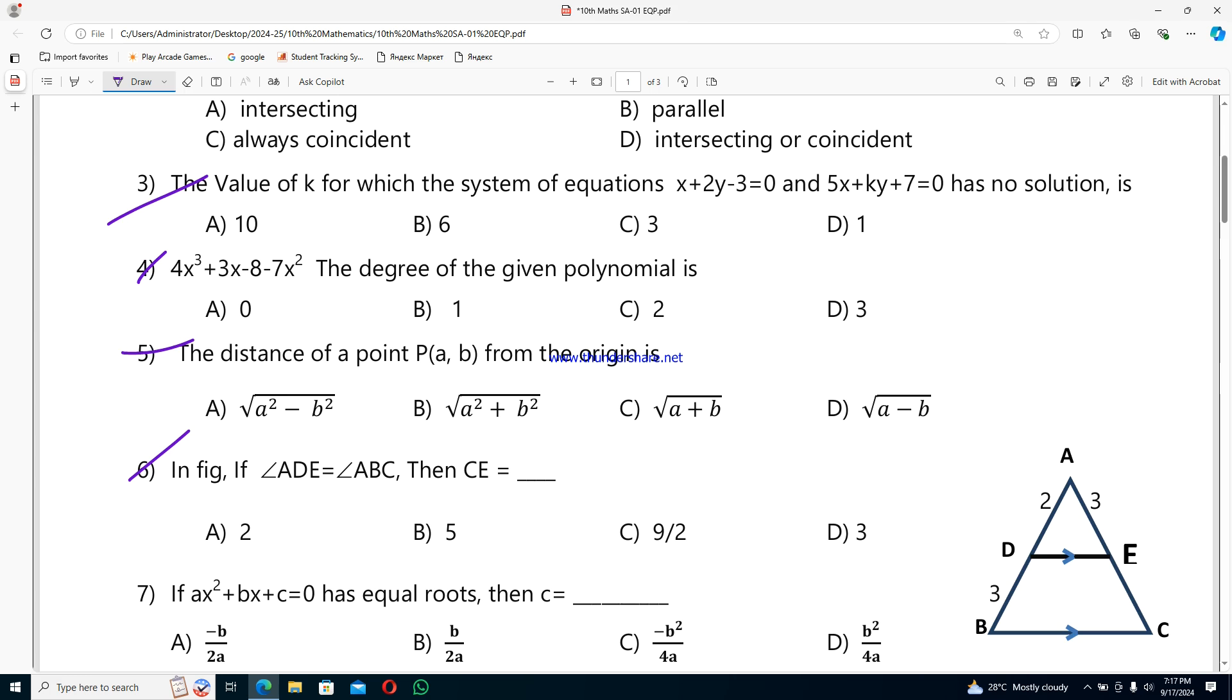Fifth question: the distance of point P(a,b) from the origin is option A a²-b², option B √(a²+b²), option C √(a+b), option D √(a-b).